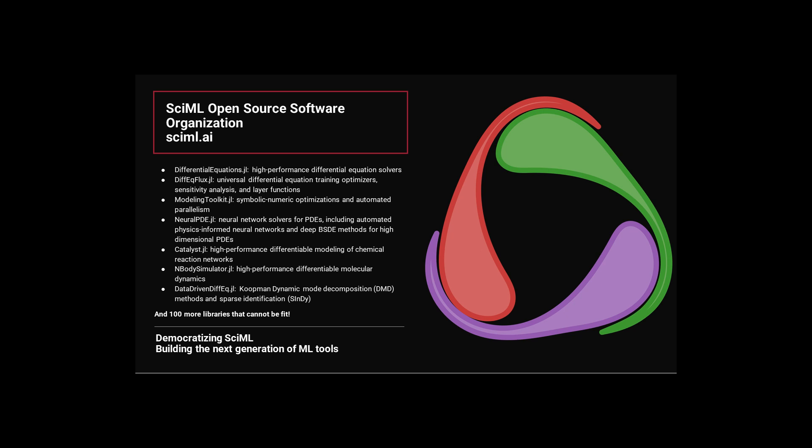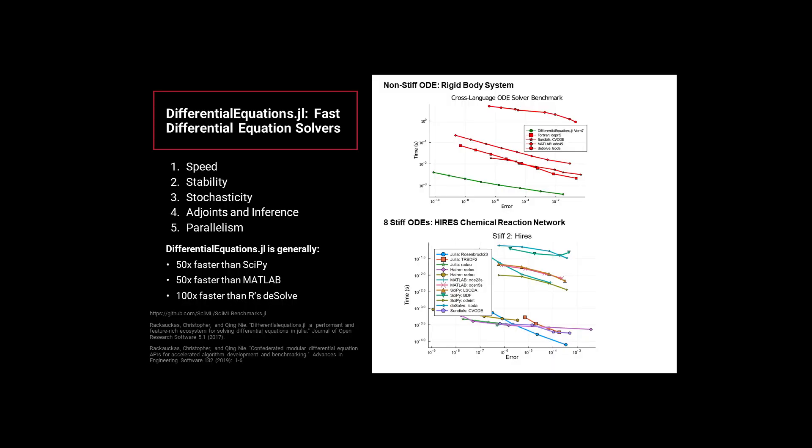SciML is the open source software organization providing the tools for doing scientific machine learning. It has over 100 libraries, which all compose together, to give a seamless workflow for automated discovery and acceleration of scientific models.